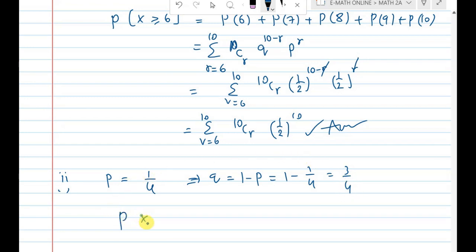Now we write sigma r equal to 6 to 10, 10Cr, Q is 3 by 4, power 10 minus r, P is 1 by 4 power r.